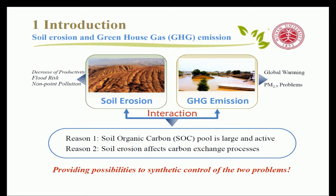Soil erosion occurs in river basins when rainfall detaches soil particles, and the detached soil particles are delivered by runoff. As one of the most widely distributed environmental problems in the world, soil erosion leads to land degradation, flood risk, and non-point pollution in river basins.